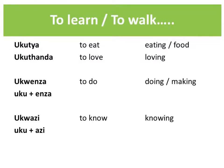Let's look at a few examples. We have the verb 'tanda', which means 'love'. 'To love' is 'okutanda', and 'loving' is also 'okutanda'. Now we're going to look at a couple of verbs that start with vowels.